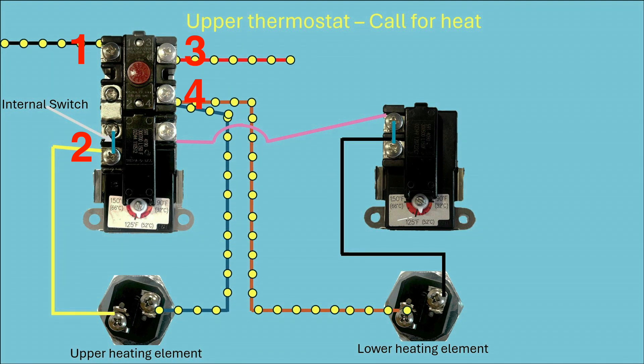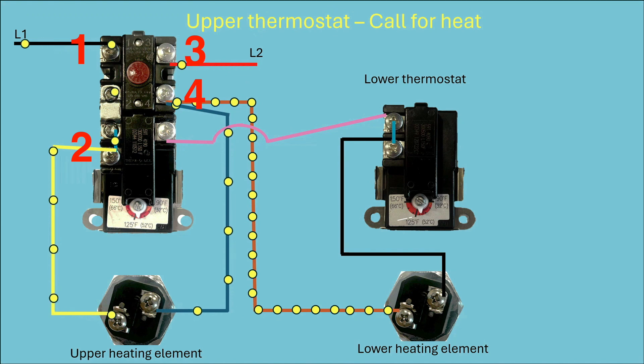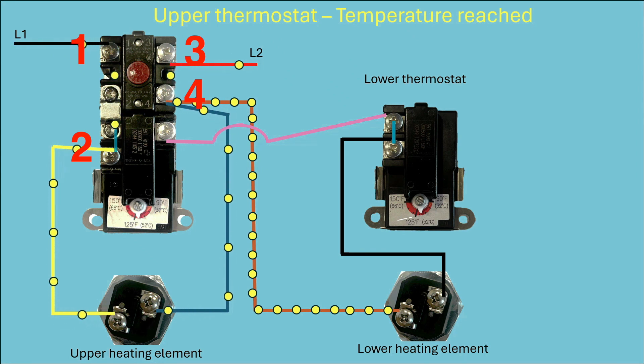So when this thermostat detects that the water temperature is below the set point, it will close that switch, which I'm showing in blue, and it will therefore basically produce a call for heat. And that will cause the current to start flowing. And you can see it flowing from screw four down the blue wire into the heating element and up the yellow wire and back and across that internal switch. And then at some point, the temperature set point will be reached. And you can see this blue switch starting to flash now. And that switch will open up and it will stop that current from flowing.